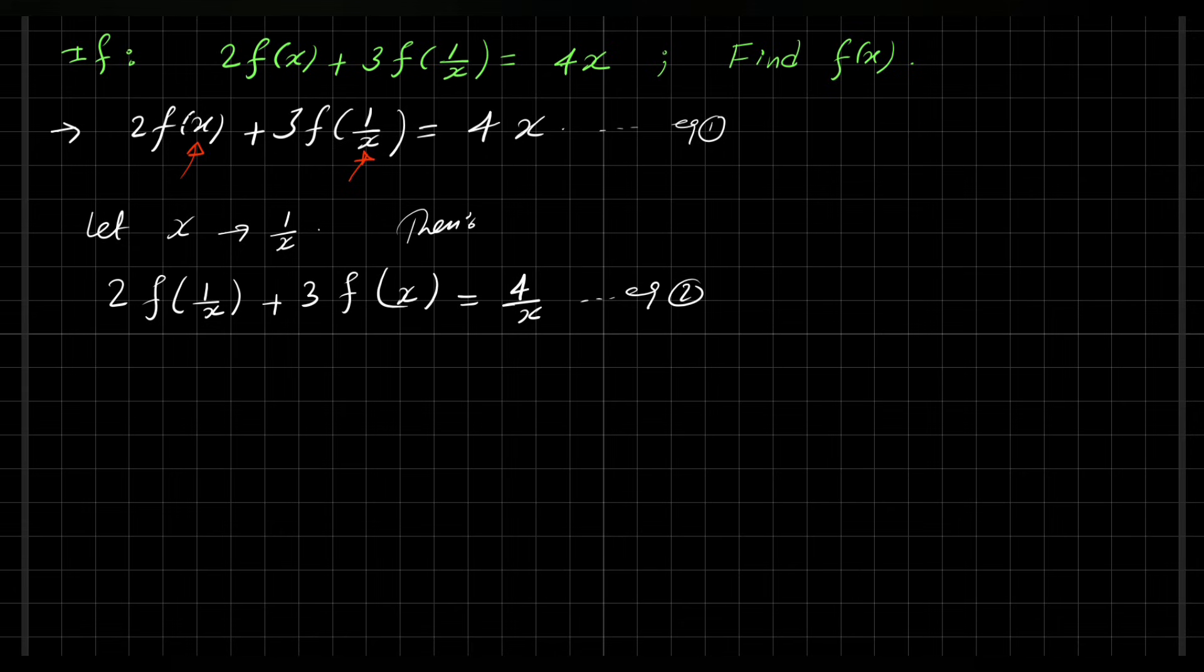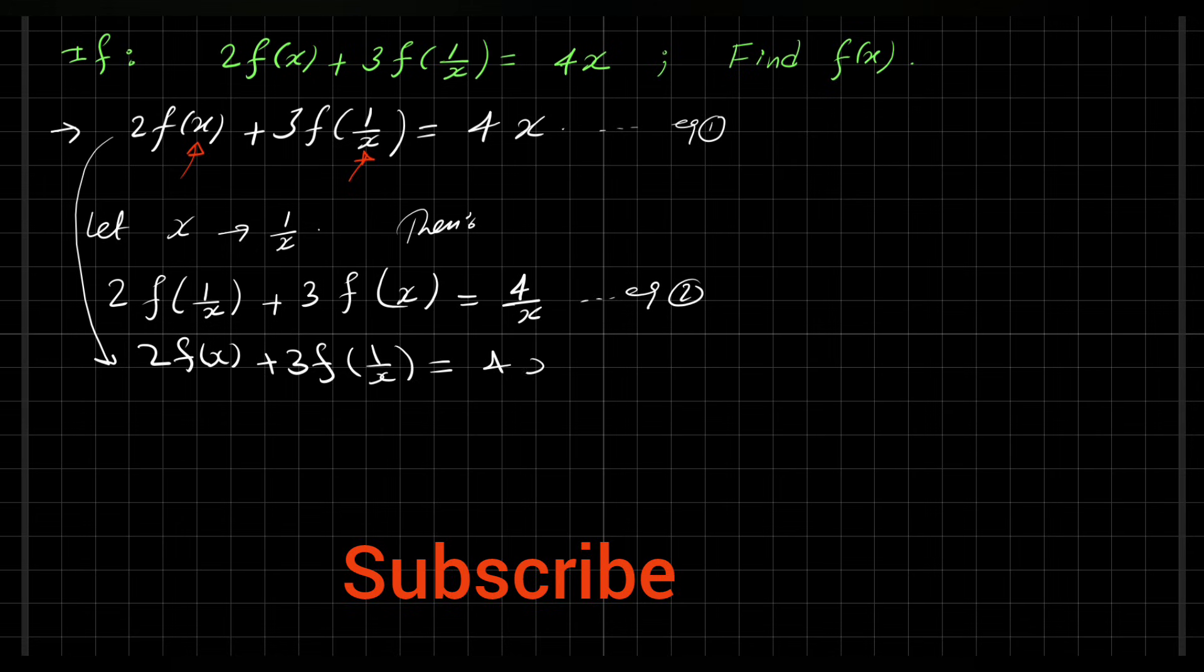Now let's rewrite equation 1 down here. So we have 2f(x) + 3f(1/x) = 4x.